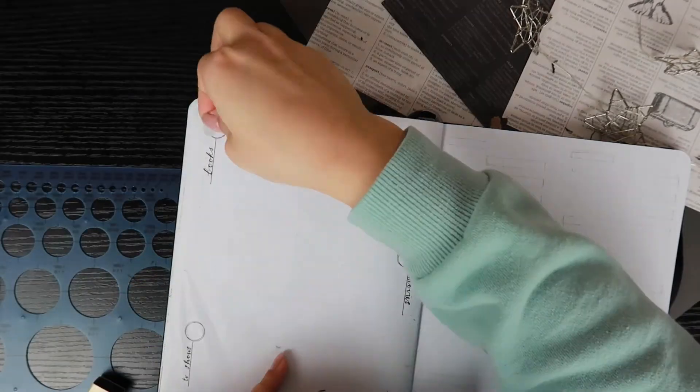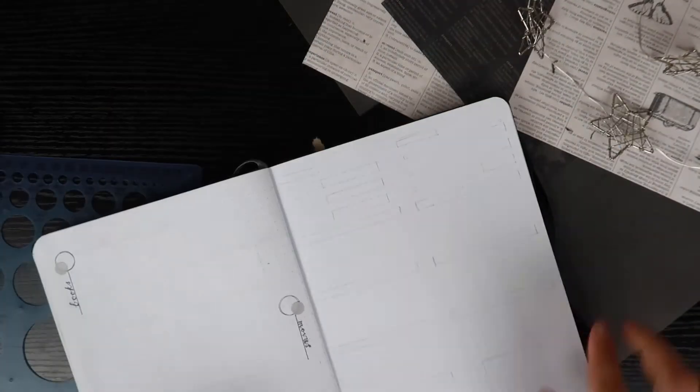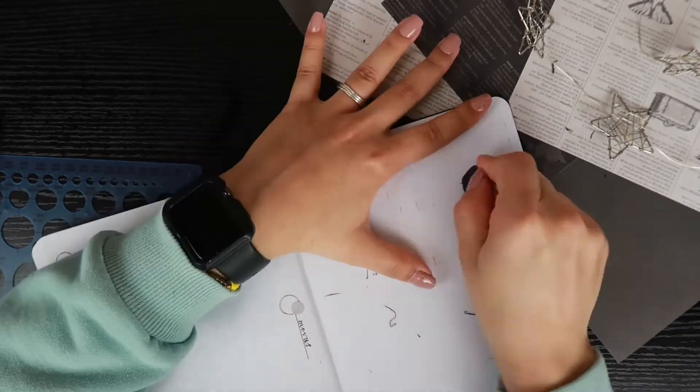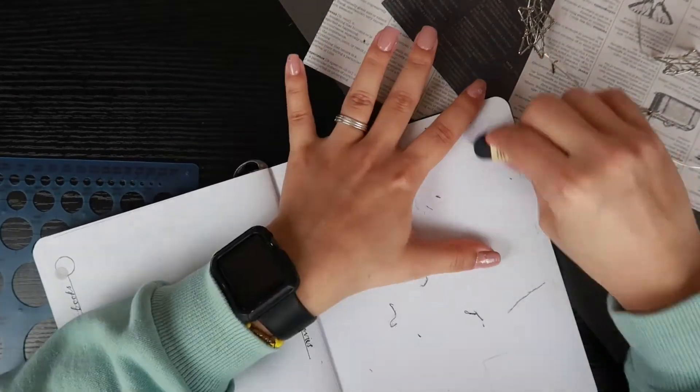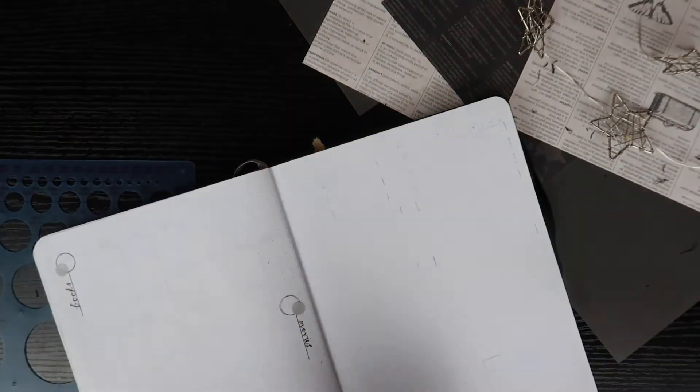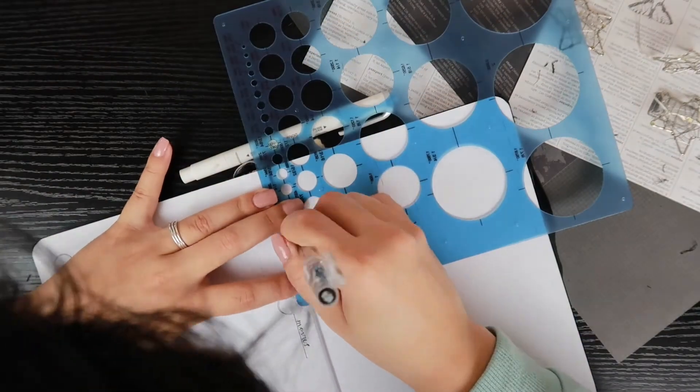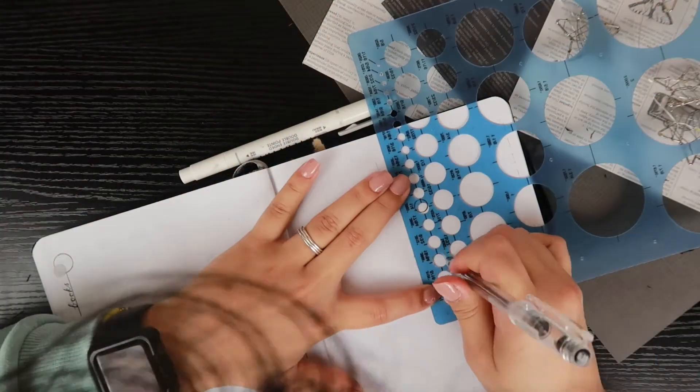And then I'm using these basic stickers again to just have an accent of gray. Now my weekly spread is heavily inspired by Covet Thee on here, and I did link her video down below in case you guys want to see where I got this idea from. I tailored it more to my needs.